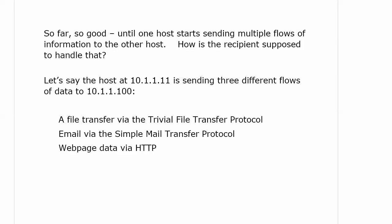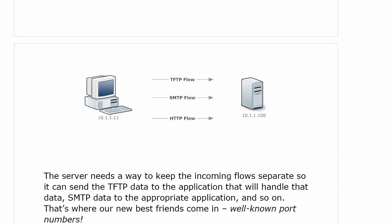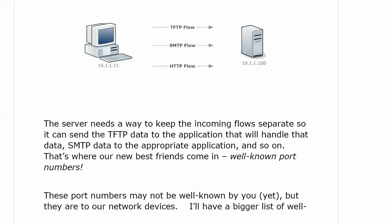When one host sends multiple flows of information to another host, how is the recipient supposed to handle that? It's not going to be enough to just know where it came from. In this example, we've got a file transfer via TFTP, email via SMTP, and web page data via HTTP. That's where well-known port numbers come in — a series of reserved port numbers for certain protocols.